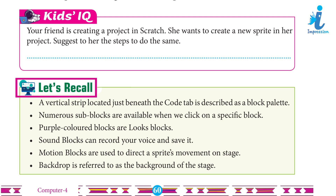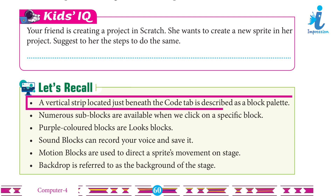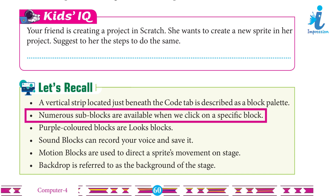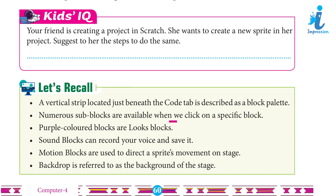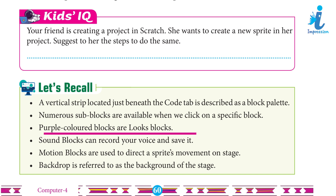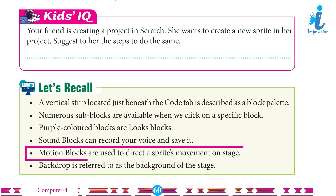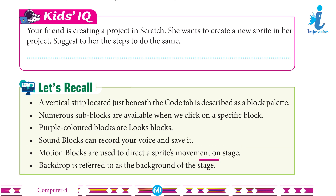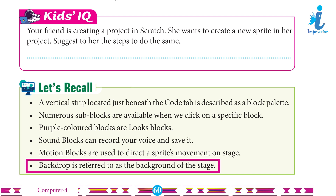Let's Recall: A vertical strip located just beneath the Code tab is called the Block Palette. Numerous sub-blocks are available when we click on a specific block. Purple-colored blocks are Looks blocks. Sound blocks can record your voice and save it. Motion blocks are used to direct a sprite's movement on stage. Backdrop is referred to as the background of the stage.